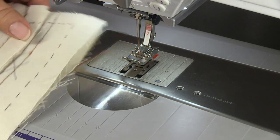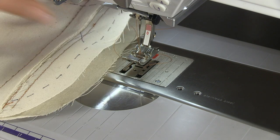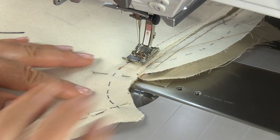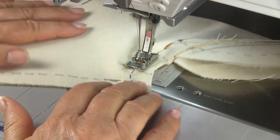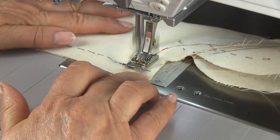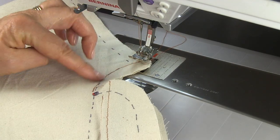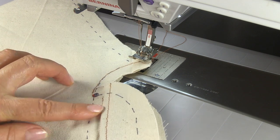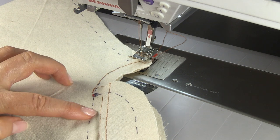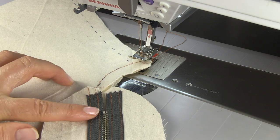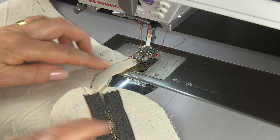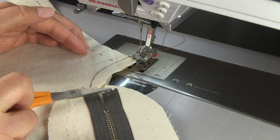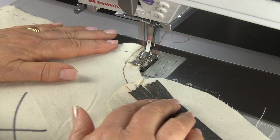With both extensions folded out, complete the front seam beneath the zip from the dot to the crotch. Clip to the dot on the left front only. You can then zigzag or overlock from the crotch all the way up to the right front extension to neaten.